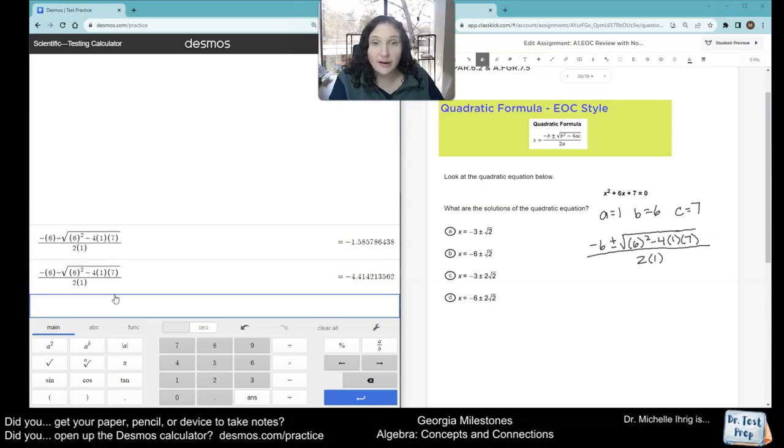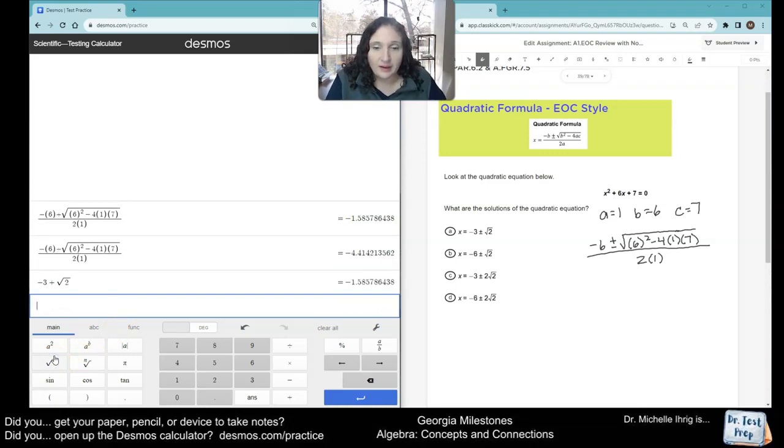All right. So those are the correct answers. Now we're going to find the equivalents. So I'm going to type in letter A. Negative 3 plus the square root of 2. That matches the first one. So now we're going to do negative 3 minus the square root of 2. That matches the second one. So it's letter A.